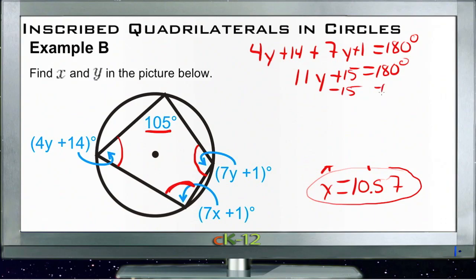Subtract 15 from both sides. Get 11y equals 165. And y then divide both sides by 11. Y equals 15 degrees. So we have x is about 10 and a half, and y is 15.